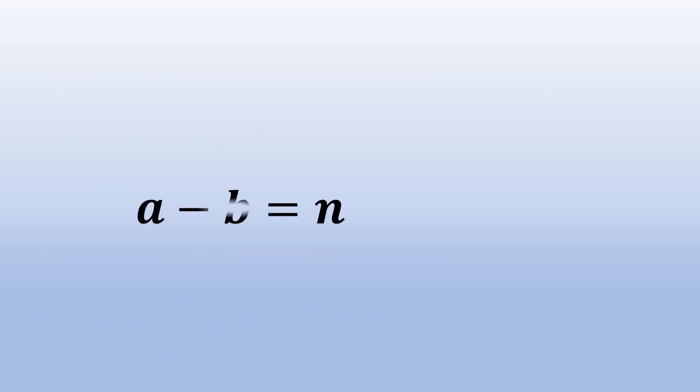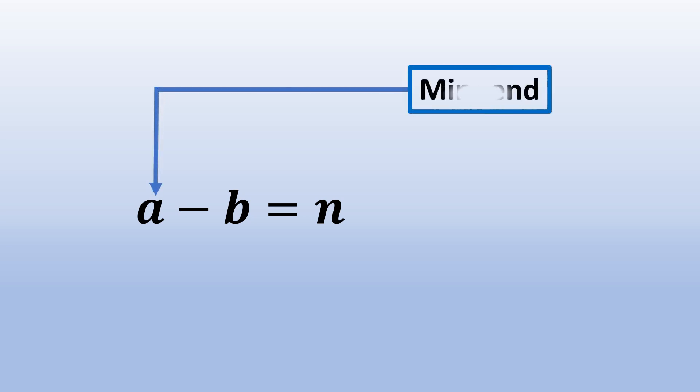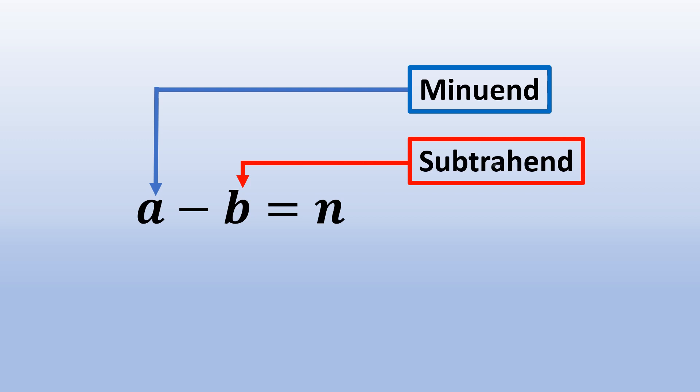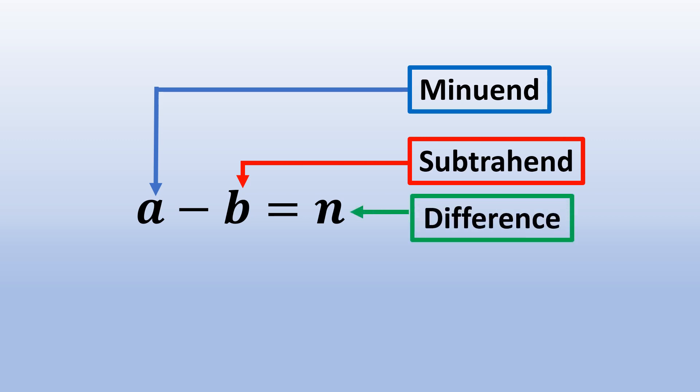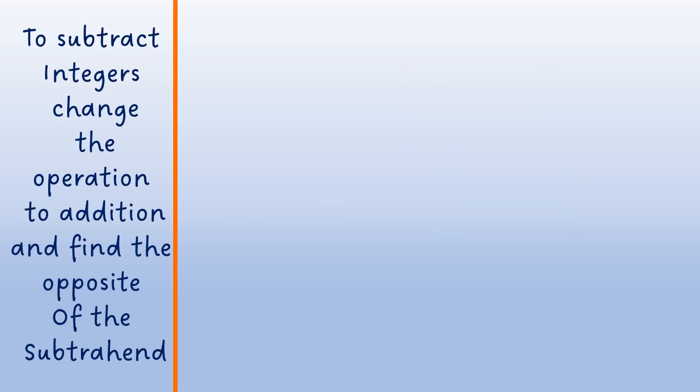Let us recall the parts of our subtraction equation. We have A minus B is equal to N. A is called the minuend, B is called the subtrahend, and N is the difference. To subtract integers, change the operation to addition and find the opposite of the subtrahend.